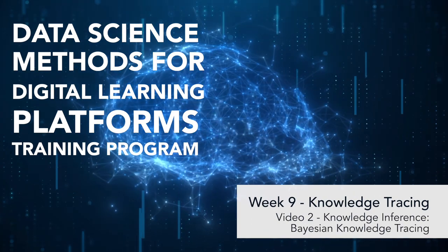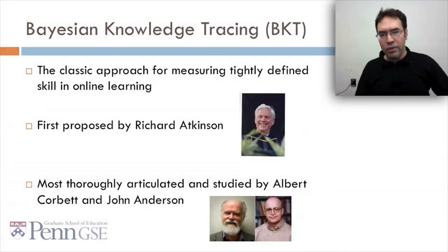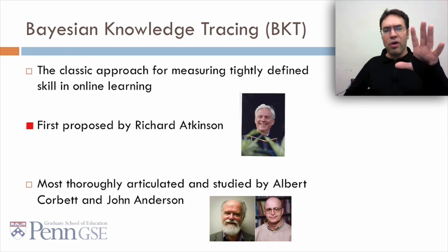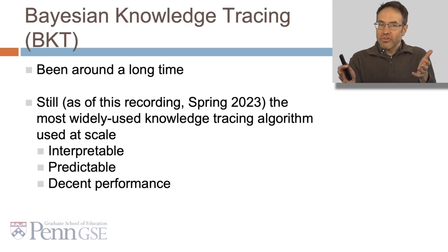Hi, I'm Ryan Baker, and in this video I'll be discussing Bayesian Knowledge Tracing. Today we're going to talk about Bayesian Knowledge Tracing, which is the classic approach for measuring tightly defined skill in online learning. It was first proposed in a paper by Richard Atkinson in the 60s, but it's most thoroughly articulated and studied by Al Corbett and John Anderson. So Bayesian Knowledge Tracing, BKT, it's been around a long time.